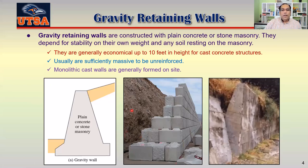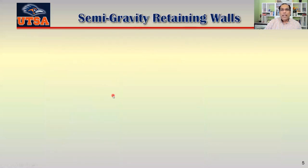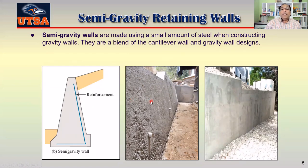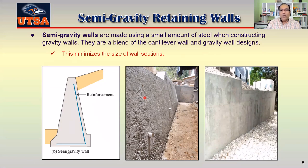The next type is the semi-gravity retaining wall. We try to make it a little thinner and use a little reinforcement so that the wall thickness is not as large. It's basically a blend of the cantilever wall and the gravity wall design. The characteristics of a semi-gravity wall are that it minimizes the size of the wall sections — you need less concrete but a little bit of reinforcement.